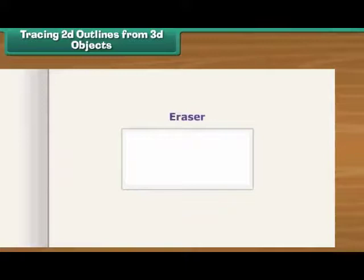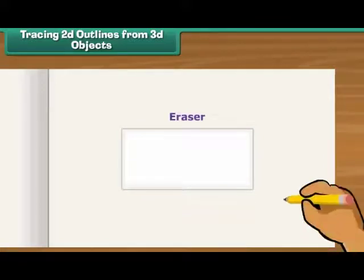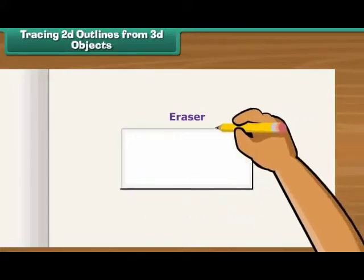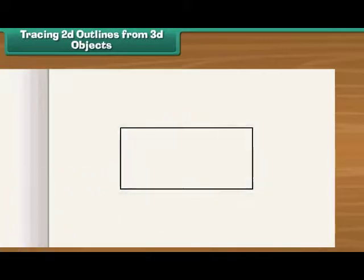Place an eraser on a sheet of paper. Draw lines along its outer edges. Remove the eraser. You can see a rectangle on the sheet.